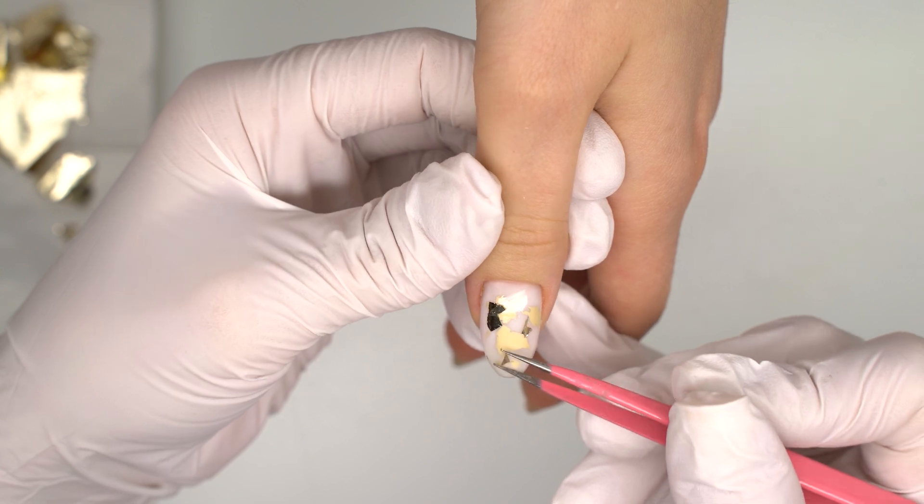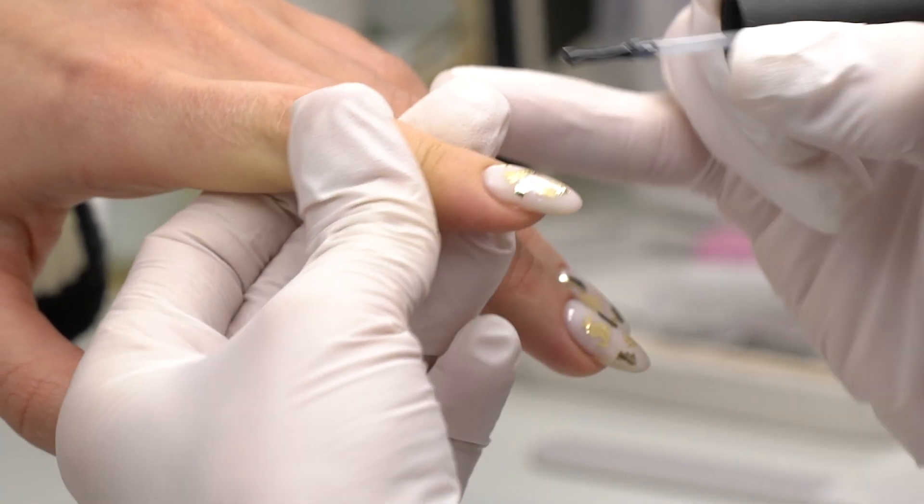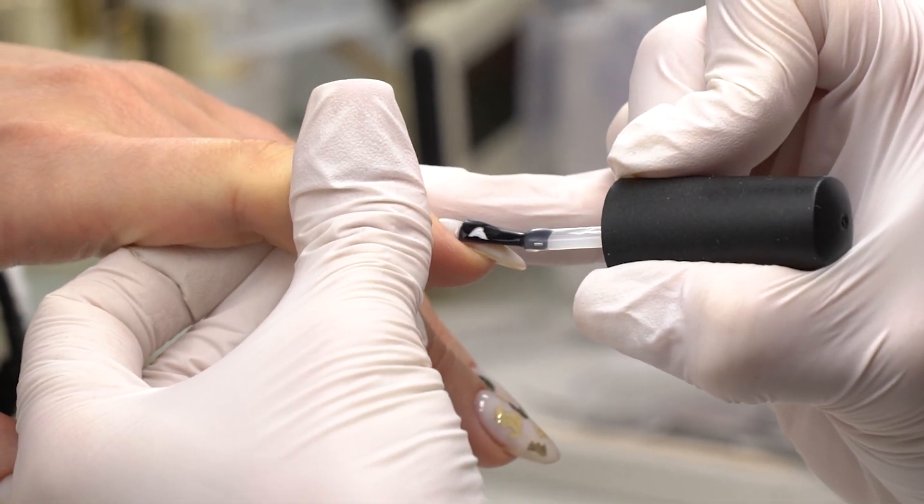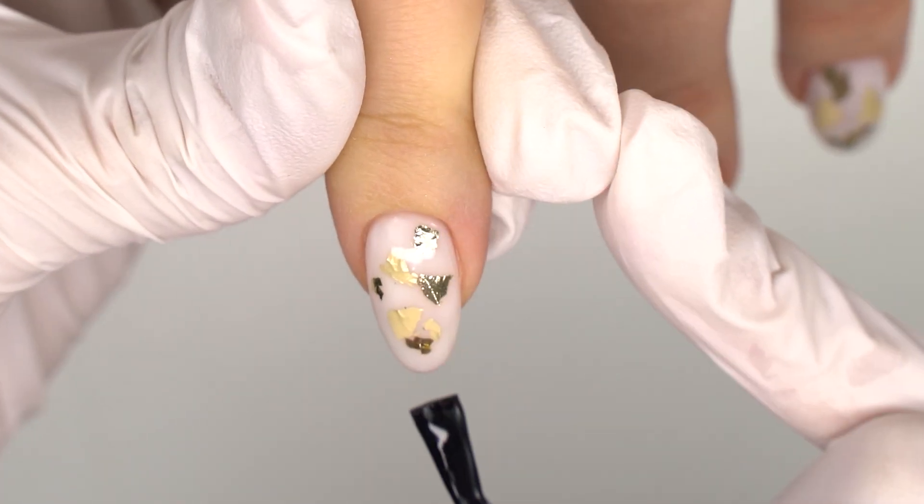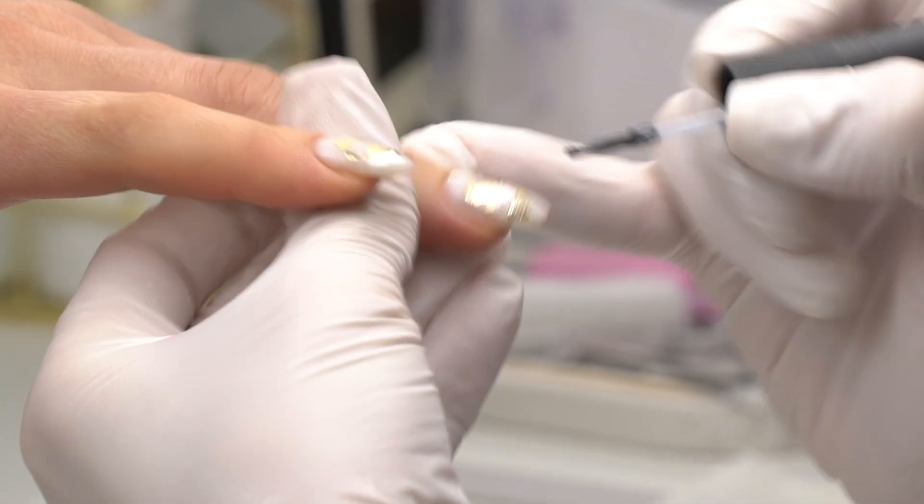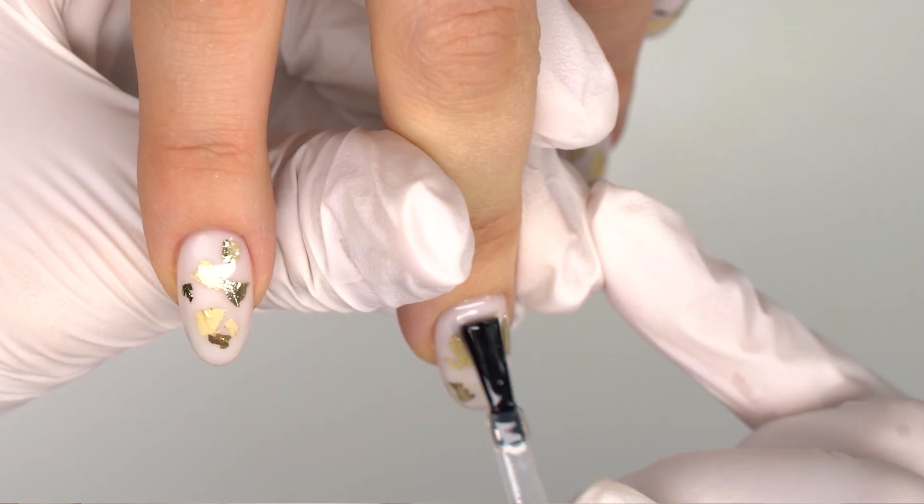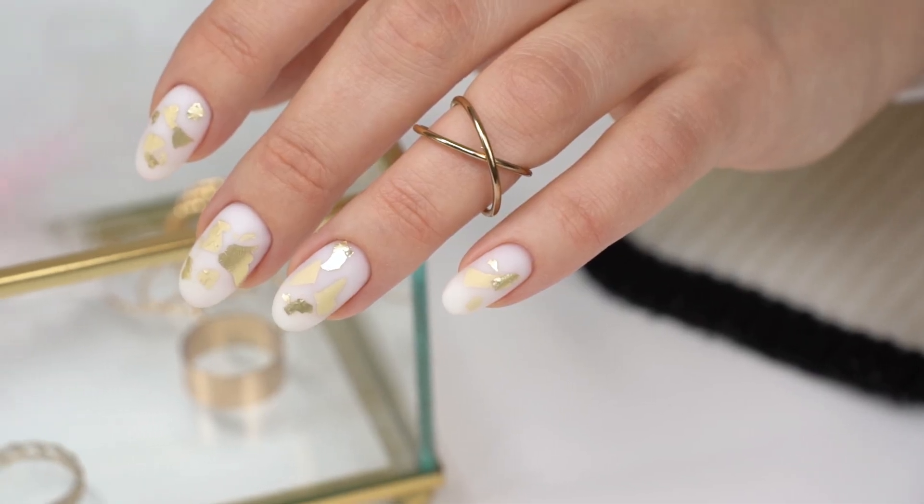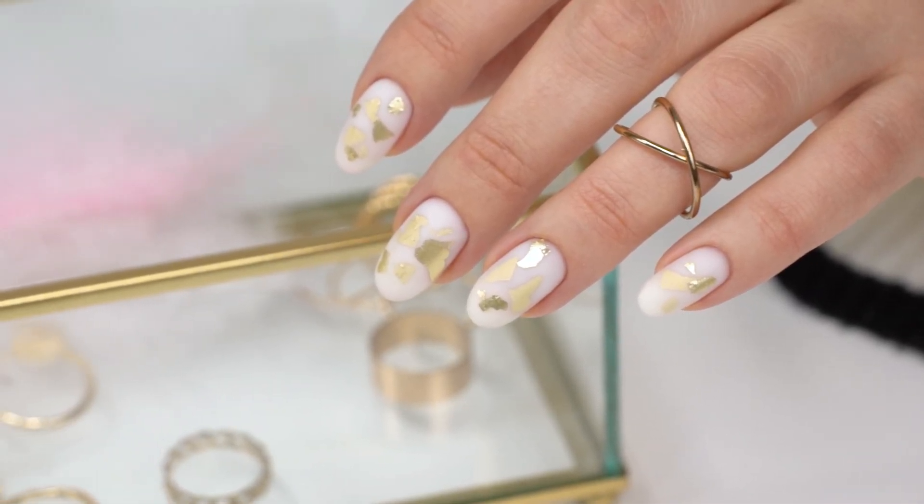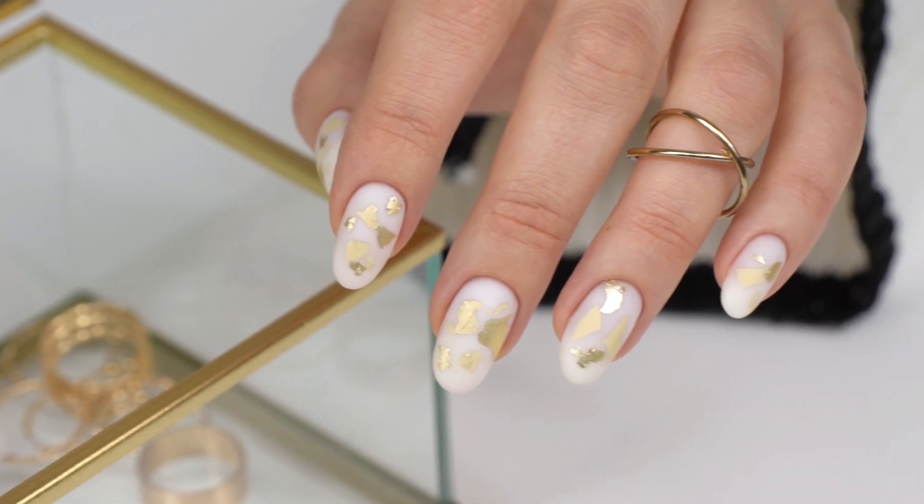And now we can cover it up either with a glossy top coat or with a matte one. Just know that light matte coatings get dirty very quickly and glossy tops provide better protection. But it's up to you. We decided to go with the matte one, and here's a final look.